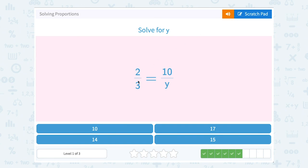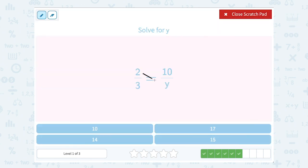Solve for y. 2 over 3 is equal to 10 over y. So let's cross multiply. 2 times y gives us 2y. 3 times 10 gives us 30.